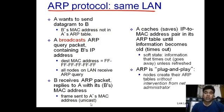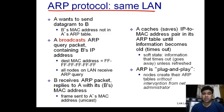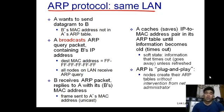Once A gets to know about B's MAC address, it saves that MAC address in its ARP table against B's IP address. ARP is also a plug-and-play protocol — nodes create their ARP tables without intervention from a network administrator. It's a very simple and very important protocol at the data link layer.